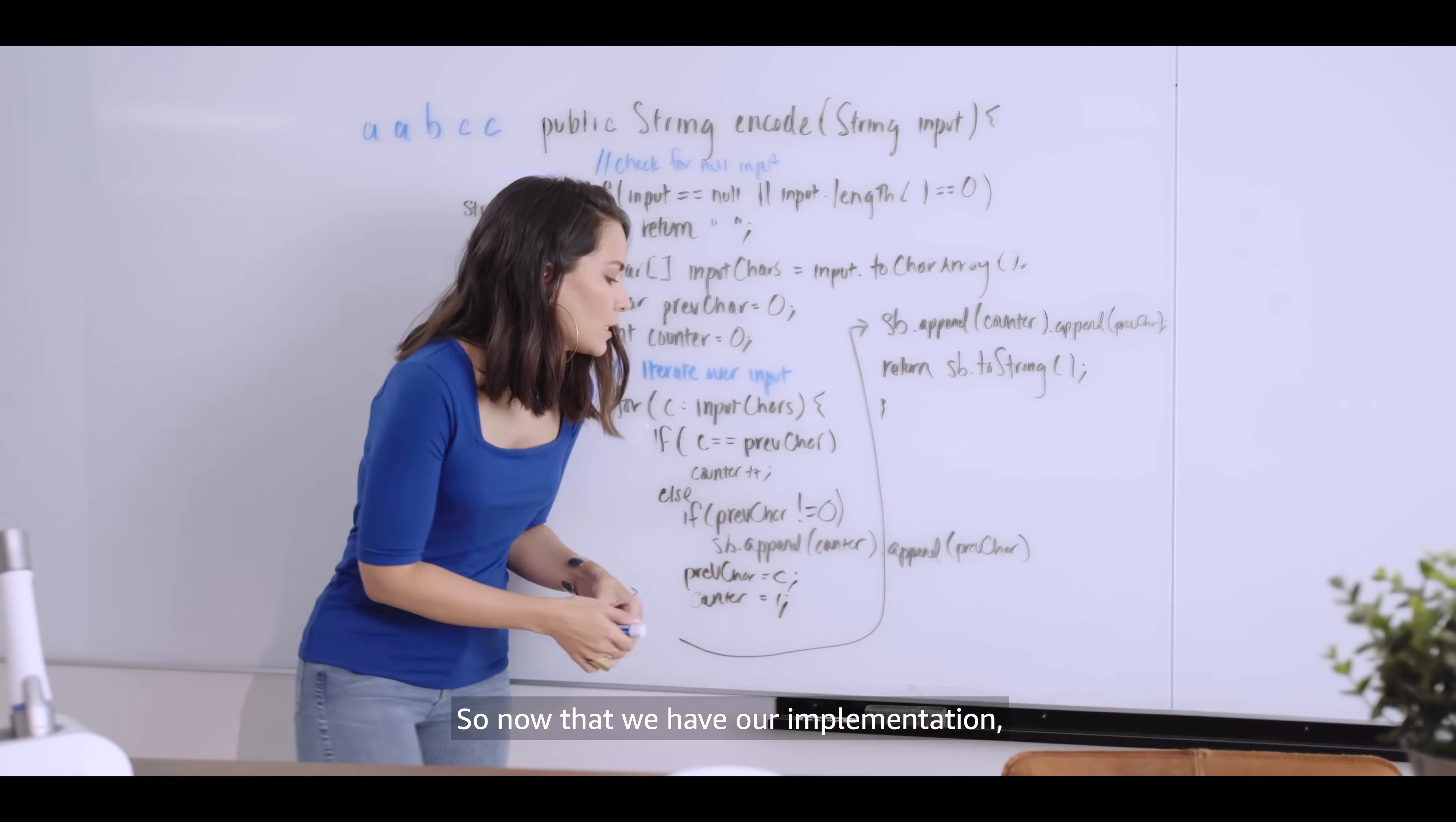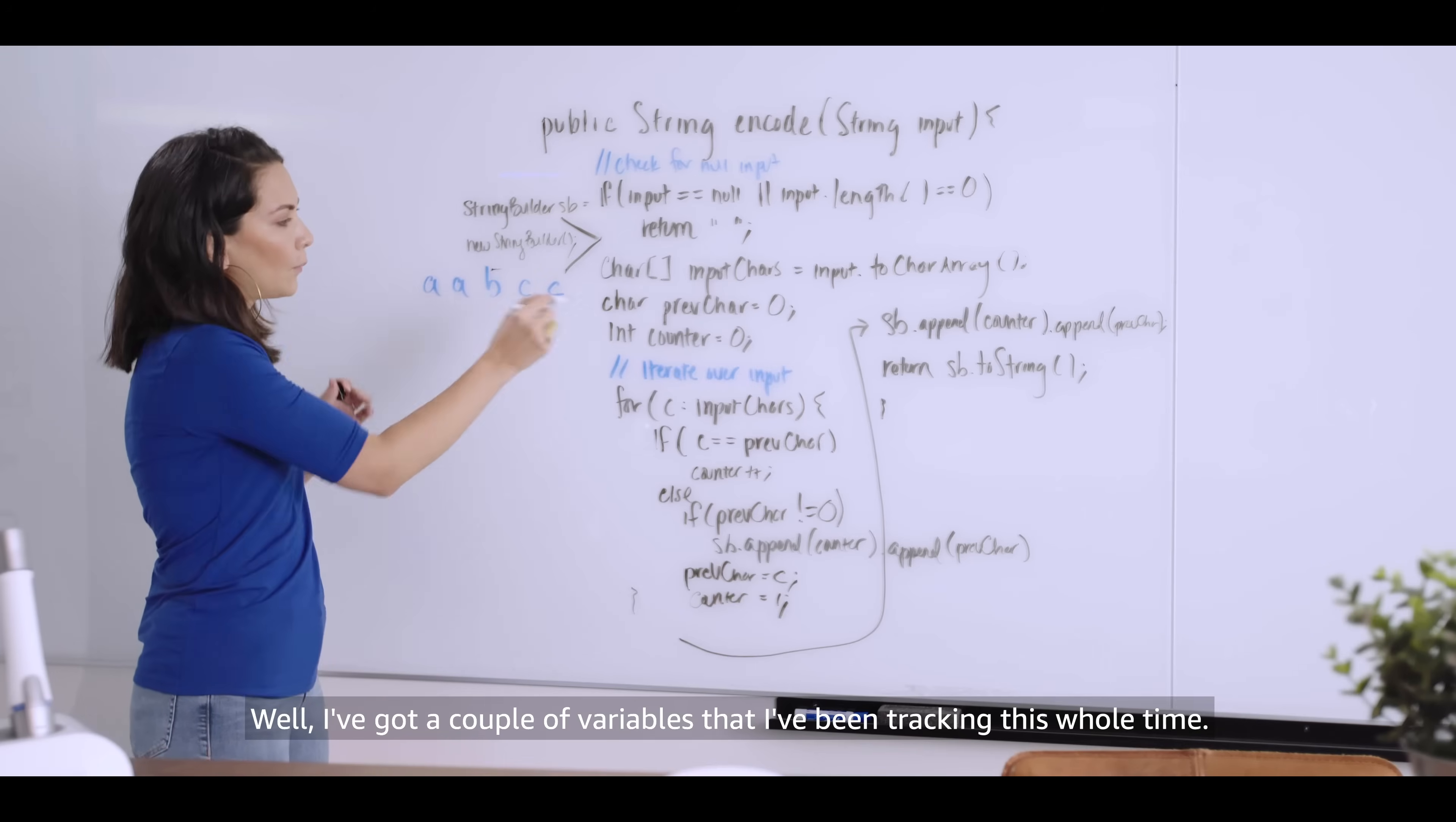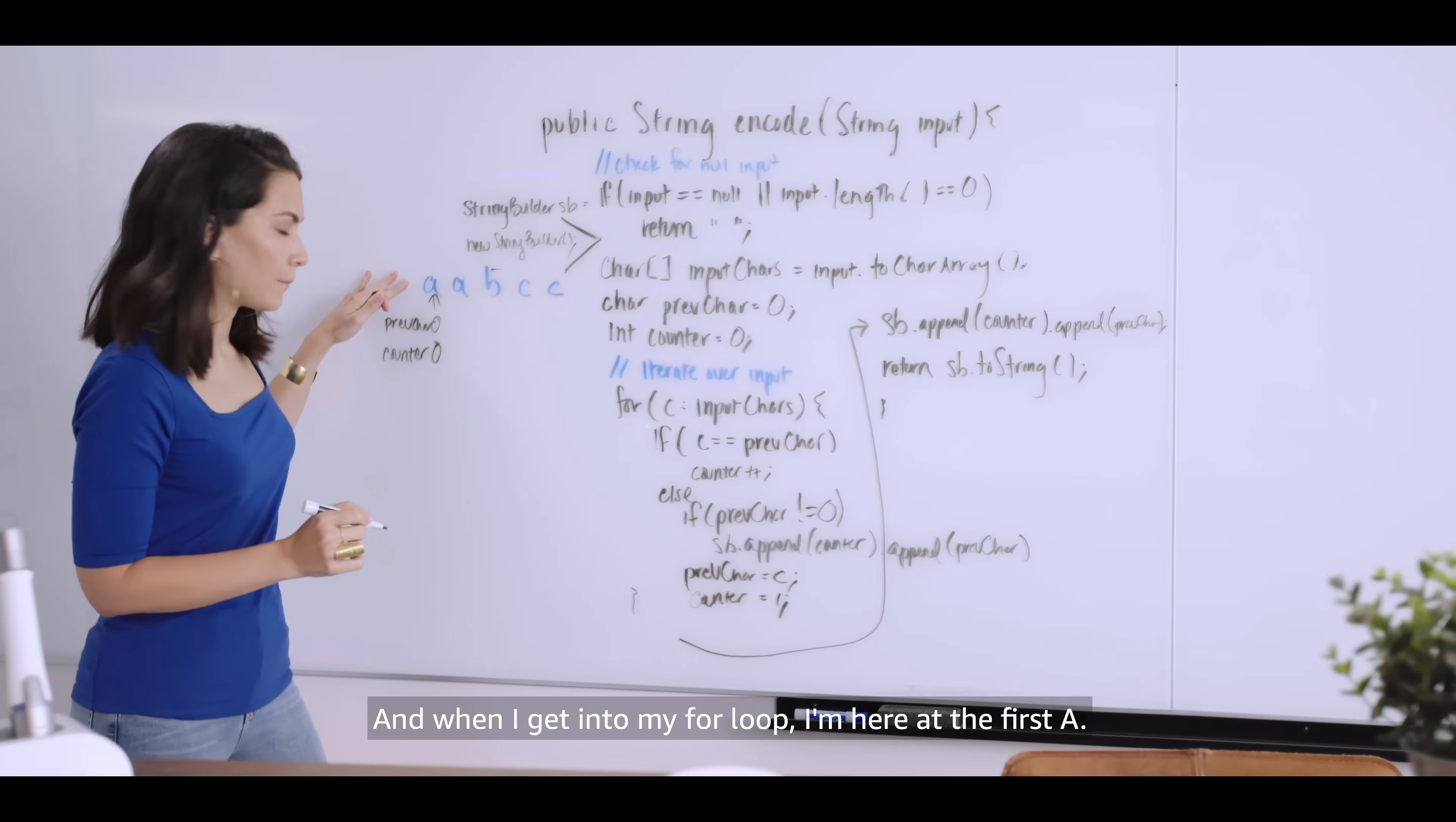So now that we have our implementation, let's test it, right? This is the next phase of structured problem solving. I'll just move this here for clarity. We know our input is AABCC. So how do we test this? Well, I've got a couple of variables that I've been tracking this whole time. I've got the previous char. I've got my counter. So let's walk through it. At first, the previous char is zero and my counter is zero. And when I get into my for loop, I'm here at the first A. So then I say, okay, well, does this equal the previous char? Nope. All right. So I can skip that. And I set the previous char to A and the counter to 1.